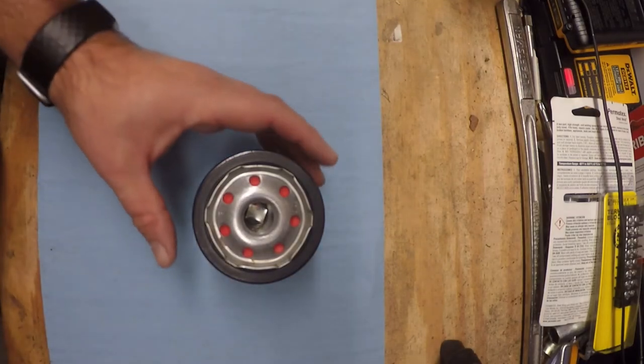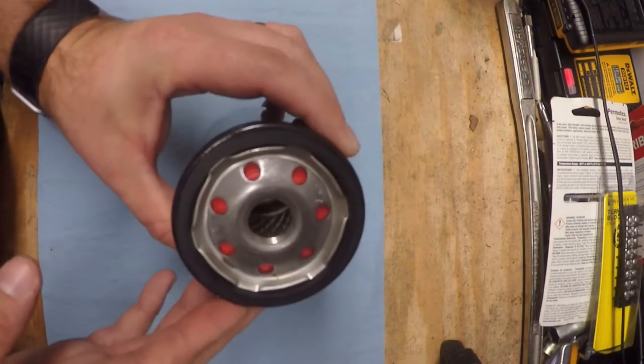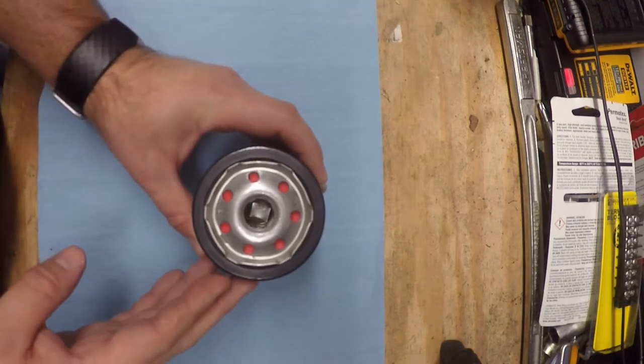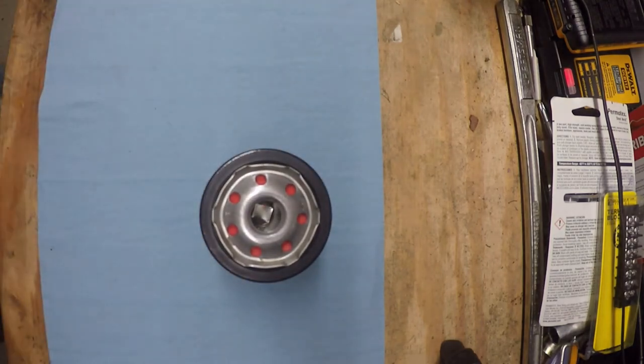Now if you notice on this filter here, you can see something red there and that's what's referred to as an anti-drain back valve. What that does is it keeps oil from draining back out of the filter between engine startups, so when you start it up the next time you don't have any oil starvation problems for your engine which can lead to more wear and tear.